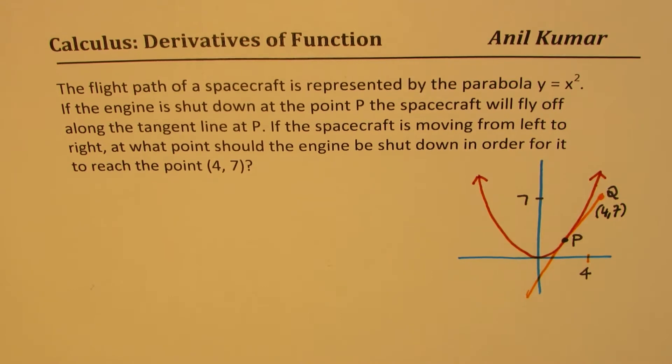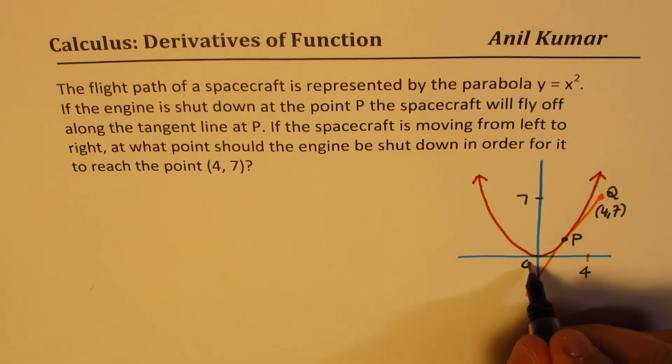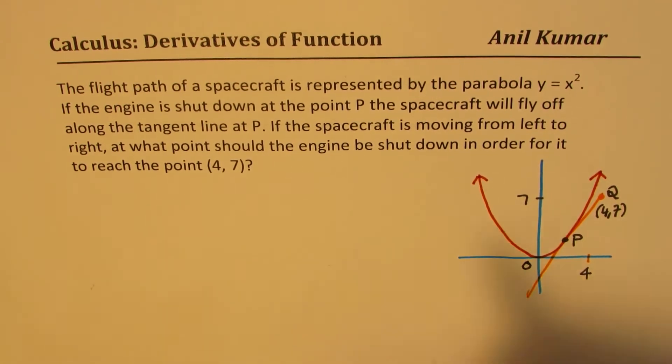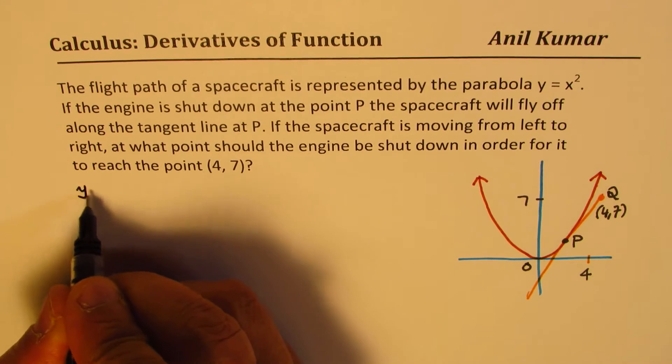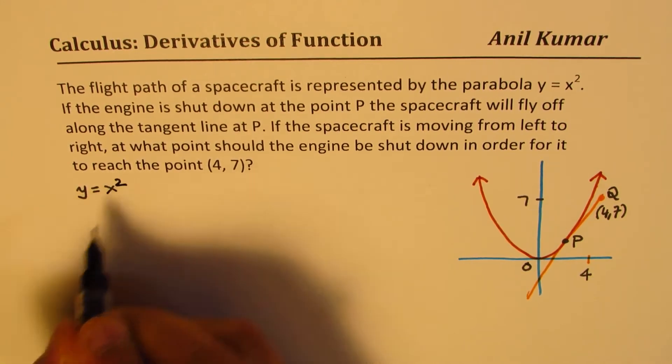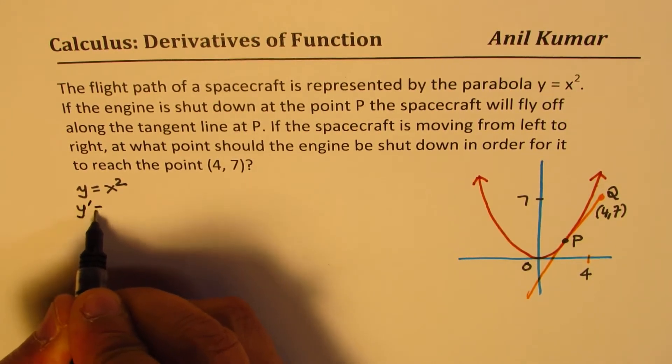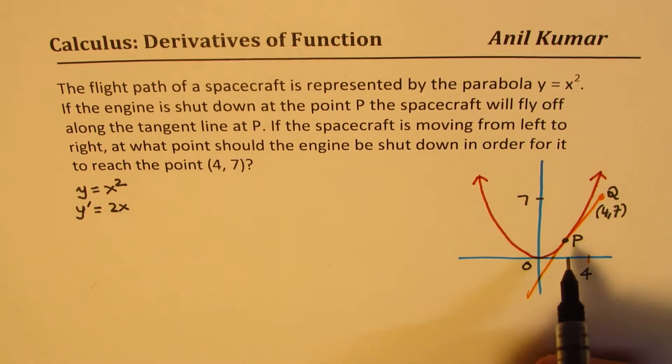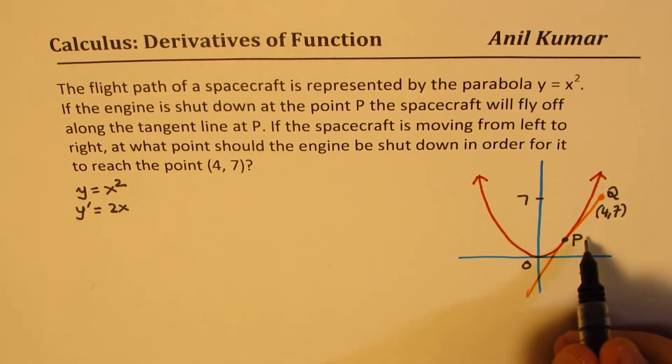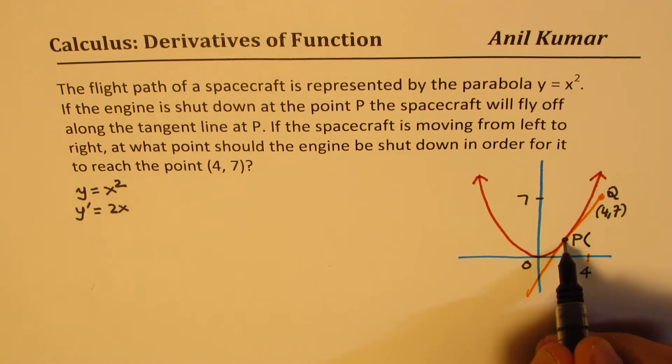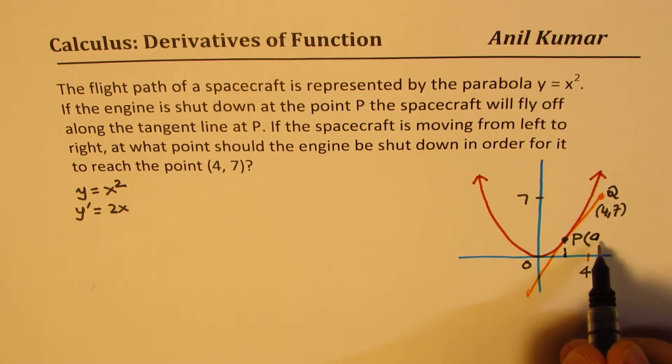Is that clear to you? Now, I hope the situation is absolutely clear. You can pause the video and answer. Now, we are given the function y equals x squared. So the derivative of this function will be 2x. At point P, we don't know what this point is. Let this point be x value of a.